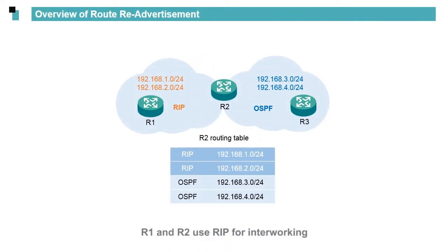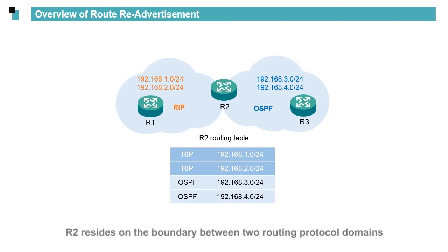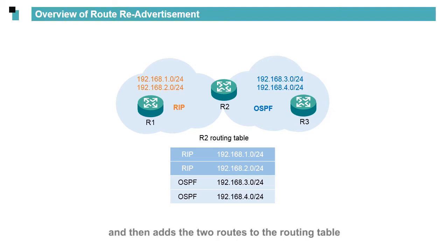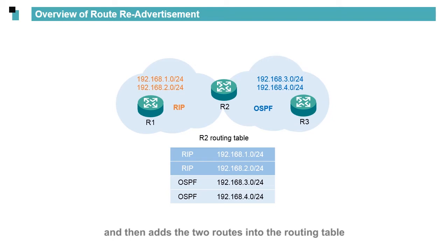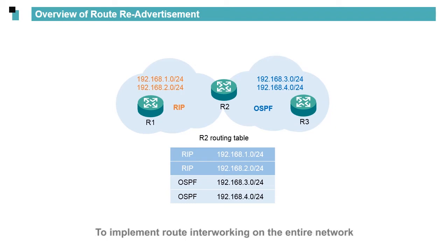On the network shown in the figure, R1 and R2 use RIP for interworking, whereas R2 and R3 use OSPF for interworking. R2 resides on the boundary between two routing protocol domains. R2 learns two routes from R1 through RIP and adds them to the routing table, and also learns two routes from R3 through OSPF. However, the two domains cannot communicate with each other.